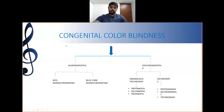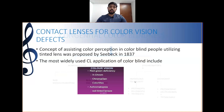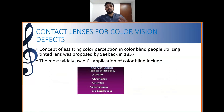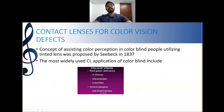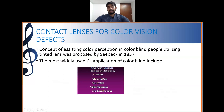This is the basic classification of color blindness. The use of tinted lenses was proposed back in 1937. The most widely used contact lens applications for color blindness include red-green deficiency, for which X-Chrome, Chromogen, and ColorMax lenses are used. For achromatopsia, red tinted lenses are used.